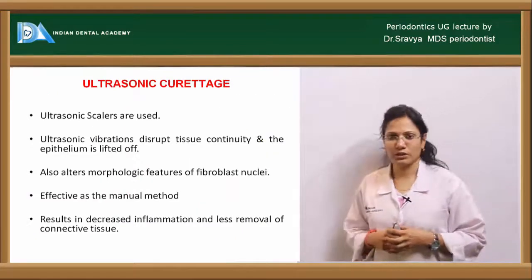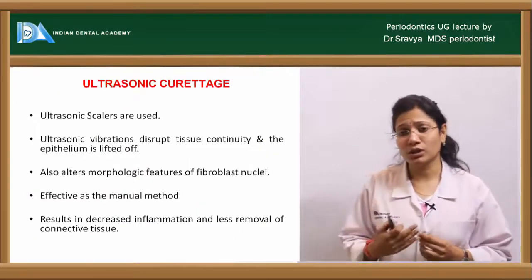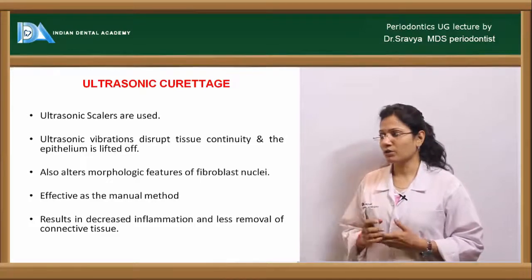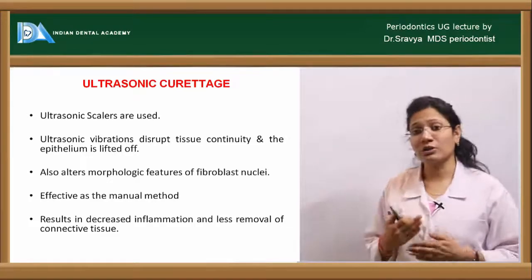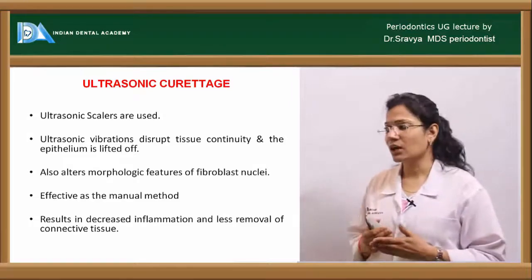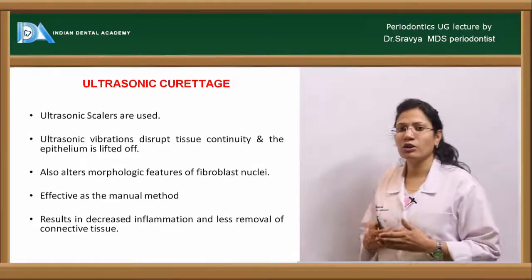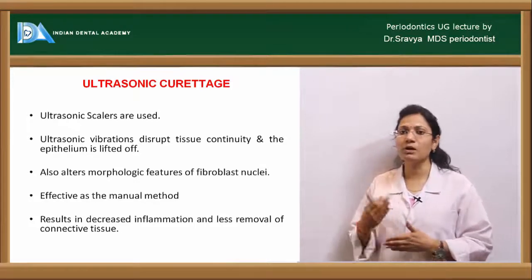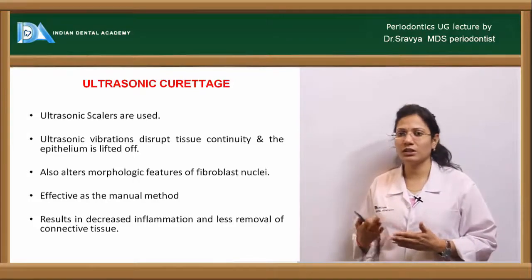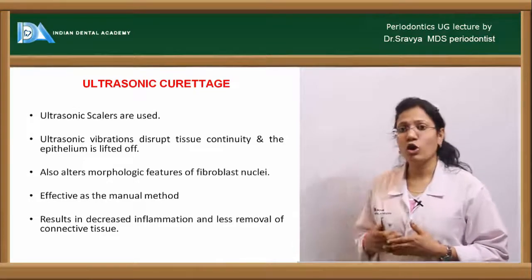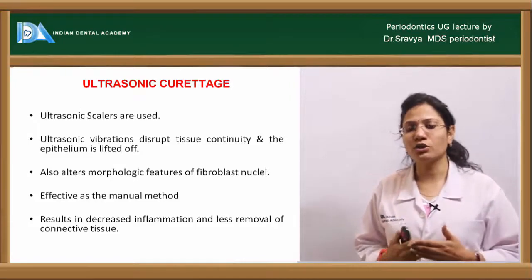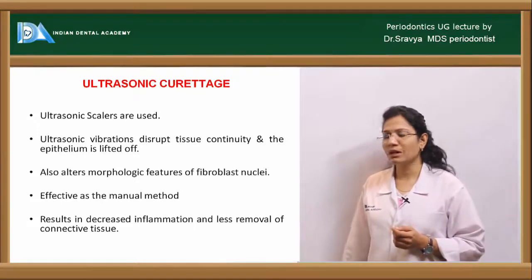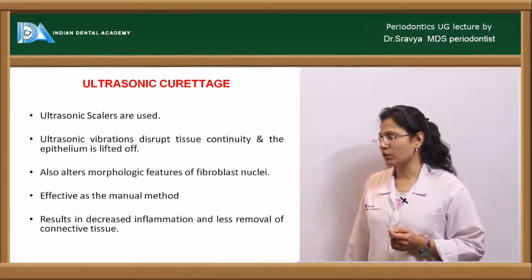For ultrasonic curettage, ultrasonic devices are used to scrape the soft tissue wall of the pocket. Ultrasonic scalers create vibrations that disrupt tissue continuity, causing the epithelium to be completely lifted off and removed. This also slightly alters the morphological characteristics of fibroblasts. It is a very effective method resulting in decreased inflammation and less removal of connective tissue.